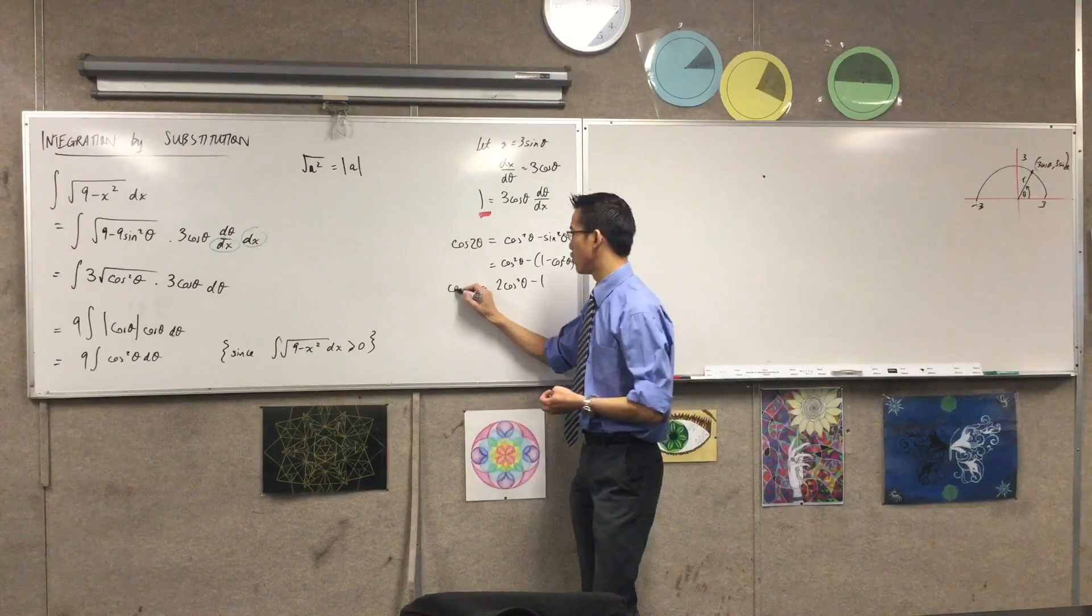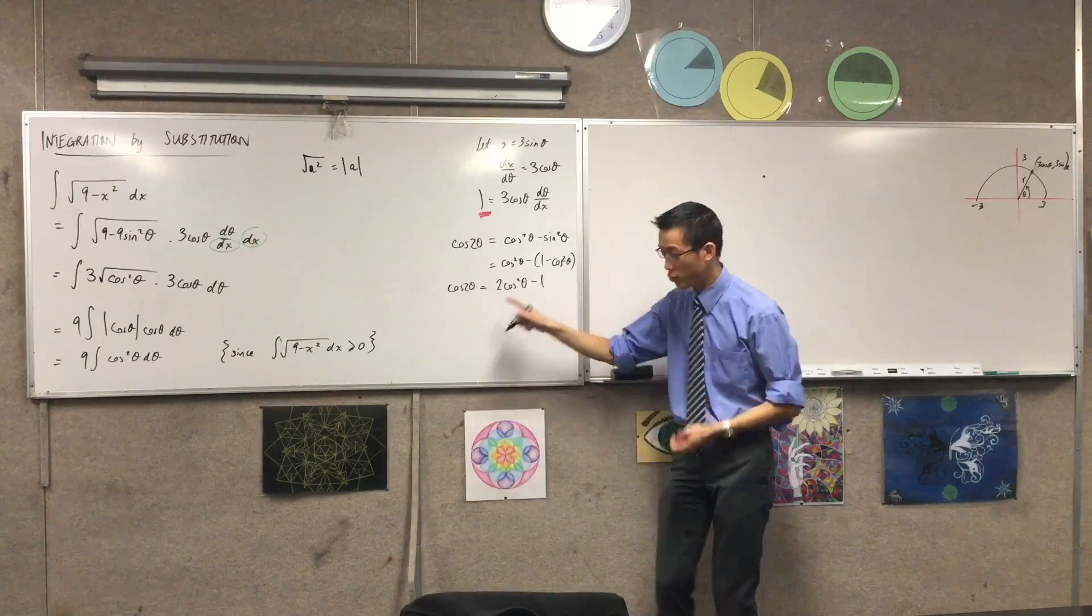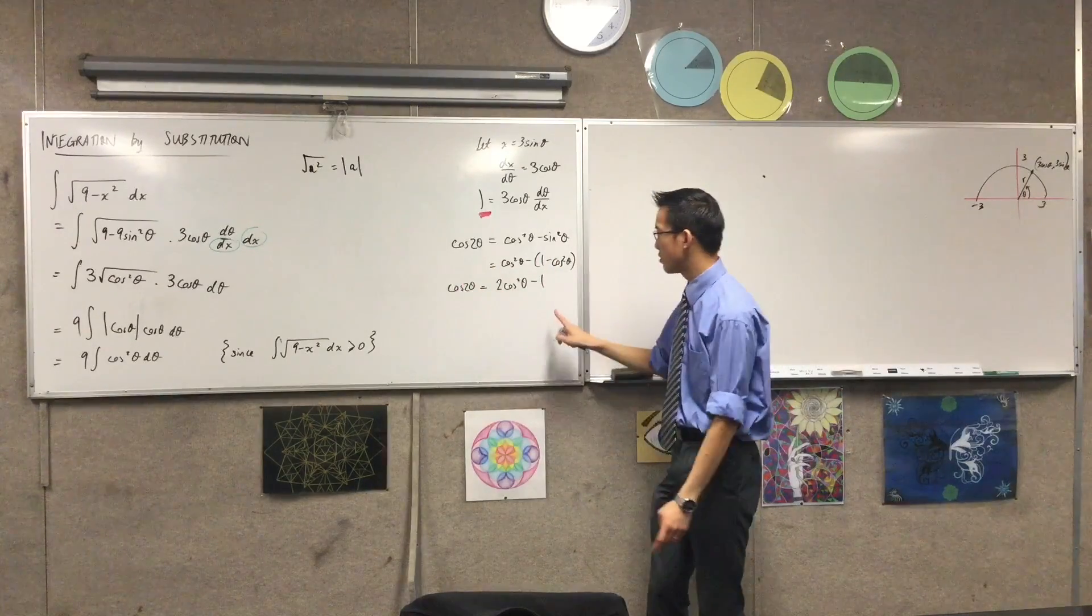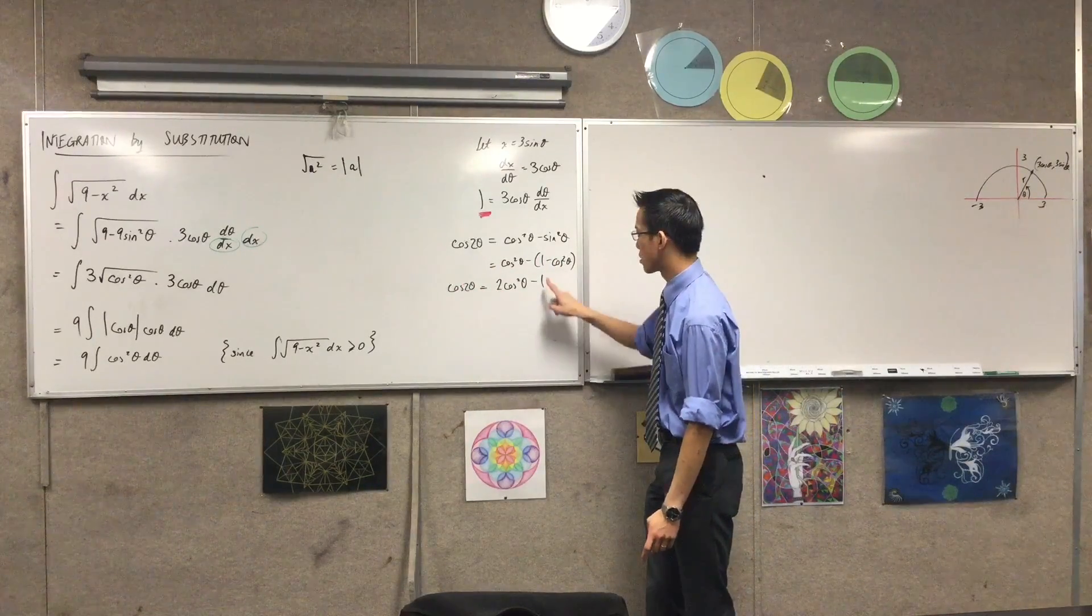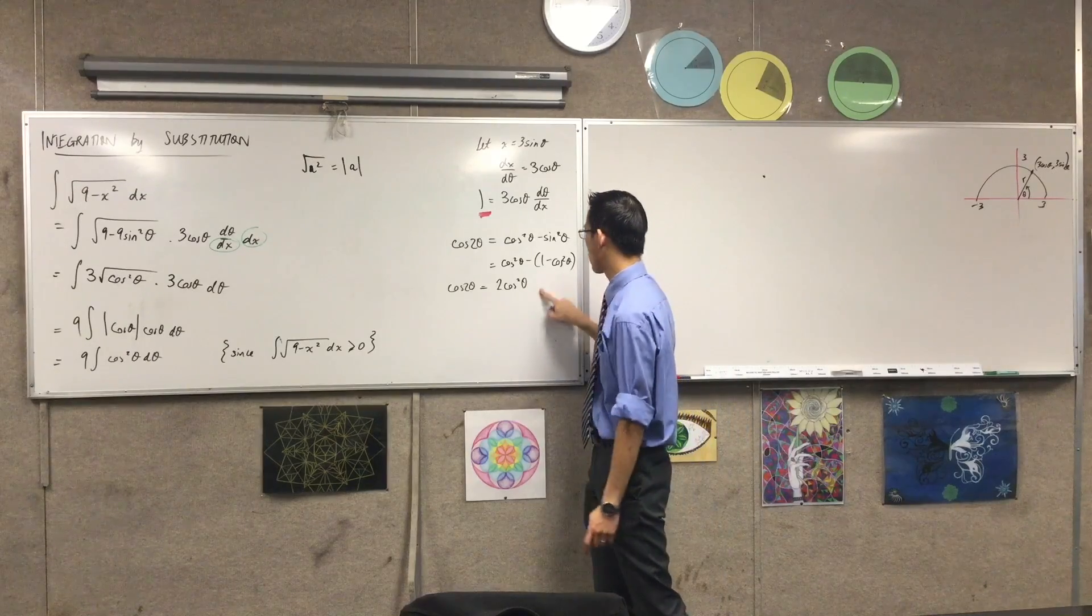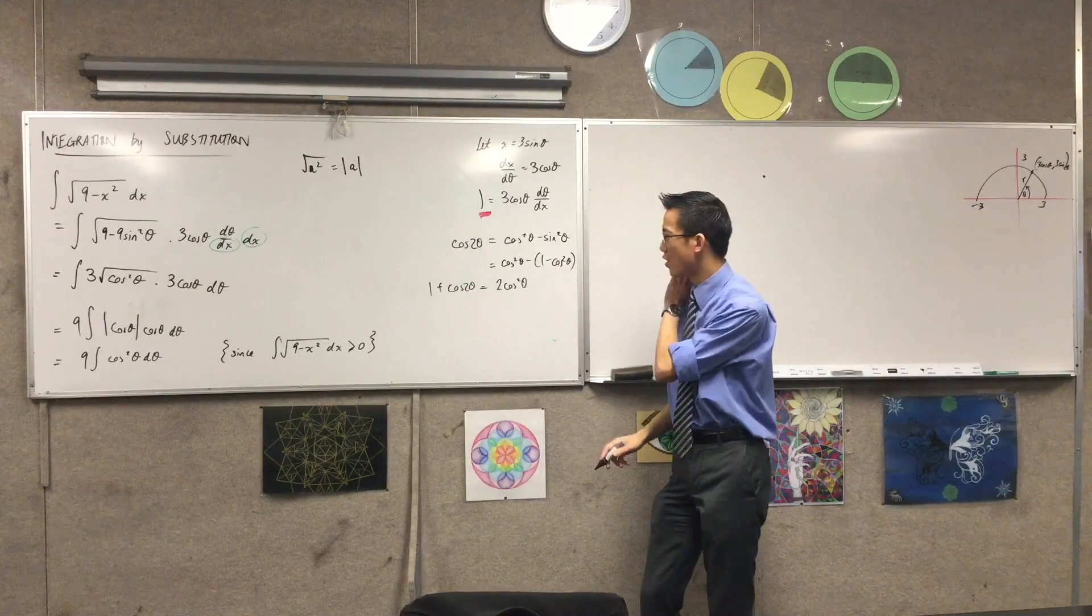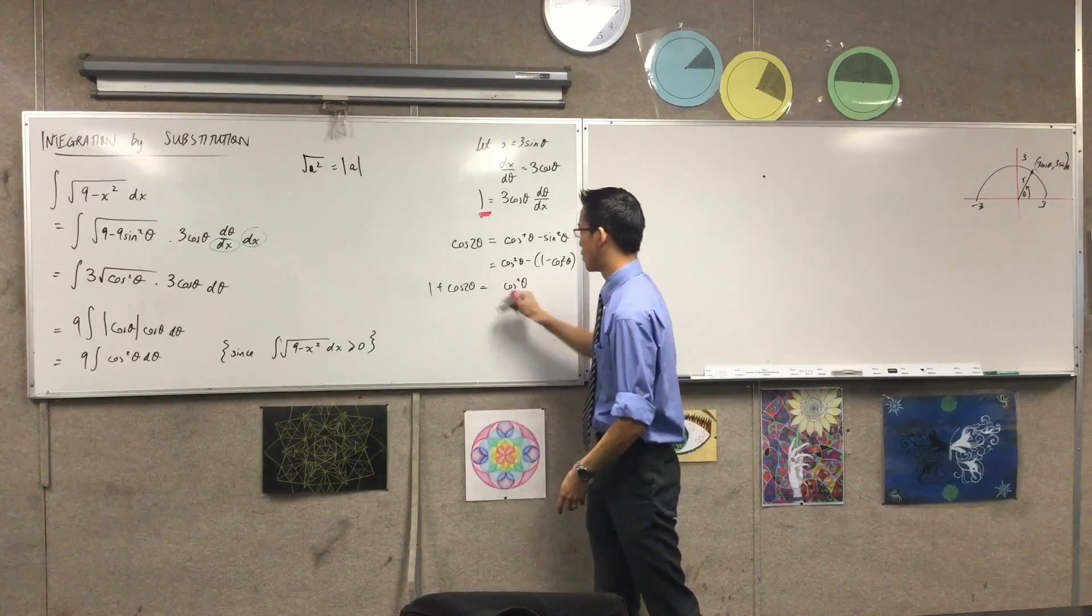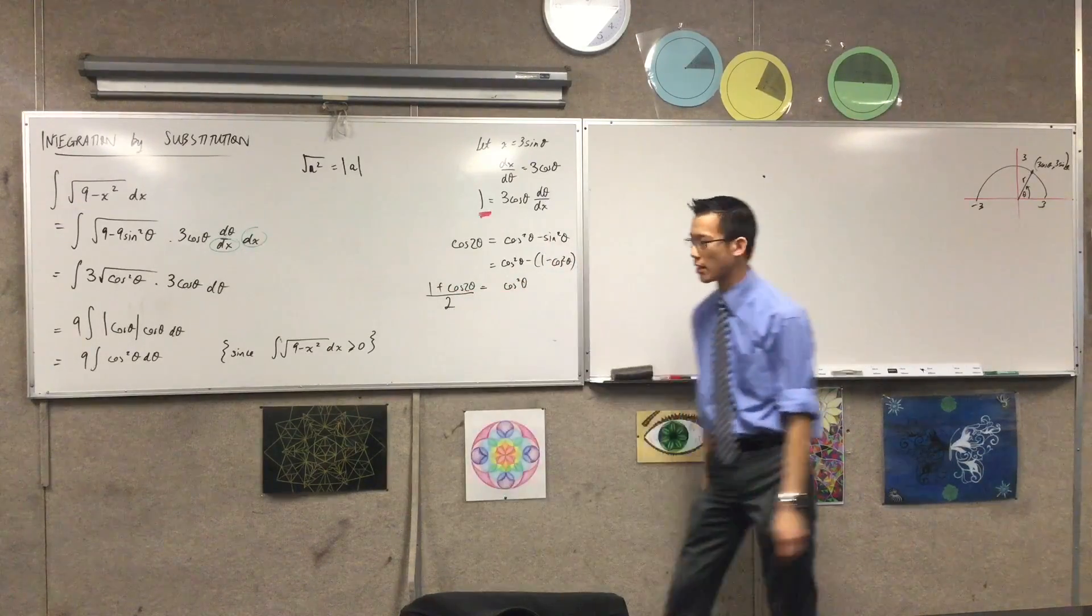Now what I want is to substitute cos squared, which I have, to some cos 2 theta business. So all I need to do is add 1 to both sides. So you can see I could add 1 like that, and then all I need to do now to make cos squared the subject, so I can do my substitution, is to divide by 2.